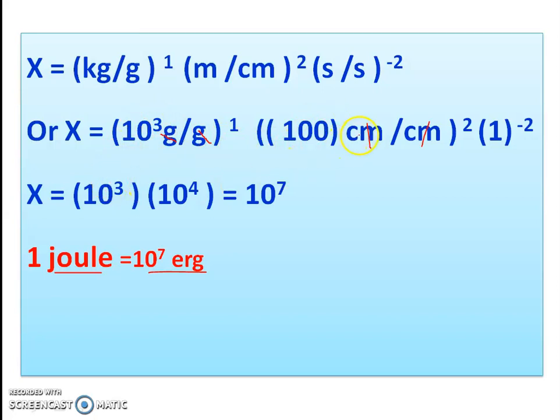10 to the power 3 times 10 to the power 4 equals 10 to the power 7. The value of x is 10 to the power 7. So 1 Joule equals 10 to the power 7 erg. The units are different but the physical quantity is work. Different system of units, 1 Joule SI to CGS conversion.